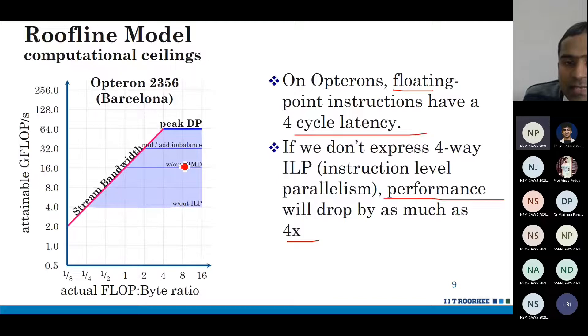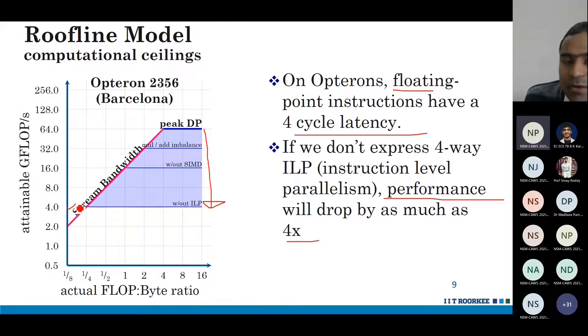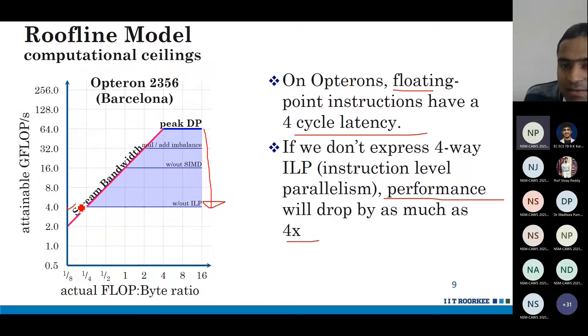You can see that these bottlenecks bring down performance a lot — from 64 GFLOPS it has come down to just 4 GFLOPS. Now let us see communication ceilings.